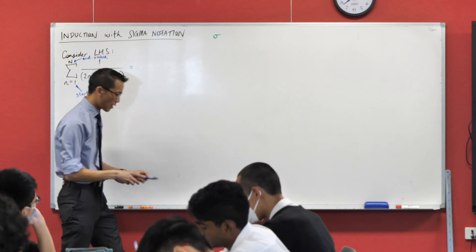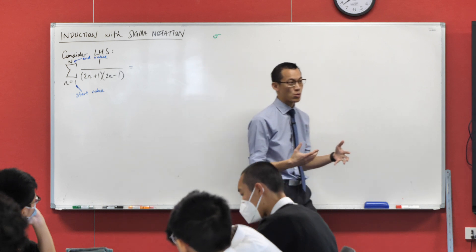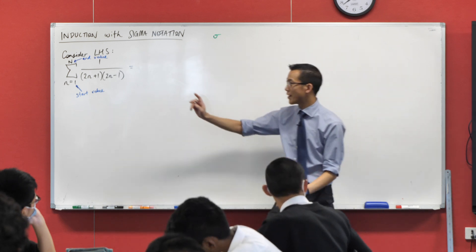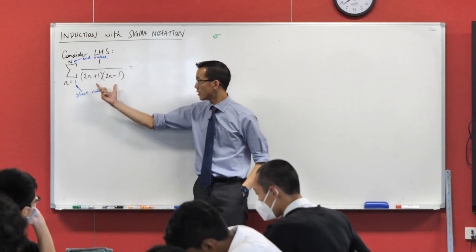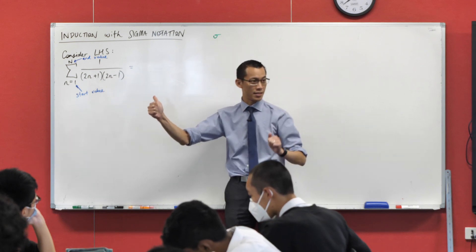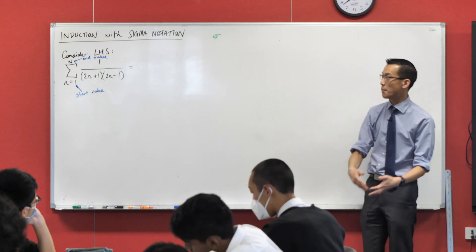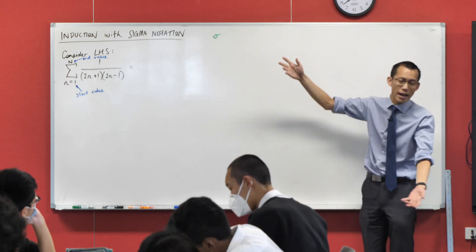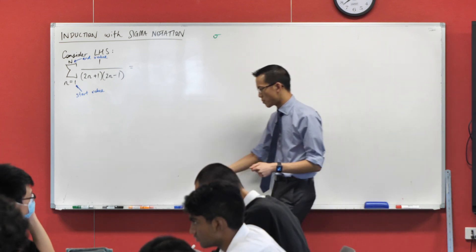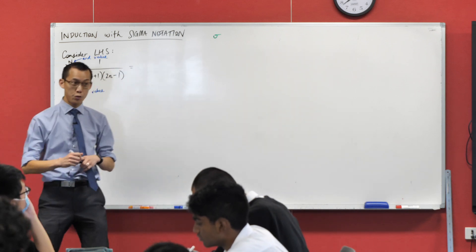Okay. So for instance, I could specify capital N equals 5. In which case, I would evaluate this expression here for 1. And then I add it to this expression for 2. And then 3. And then 4. And then I would terminate on 5. Or whatever I happen to have. So let's just make sure we understand this and write out a few terms.